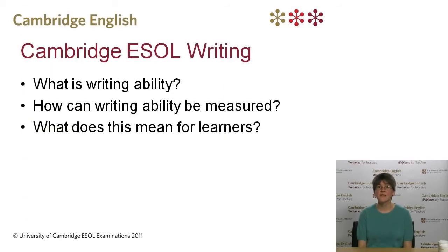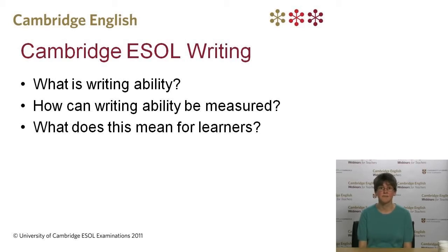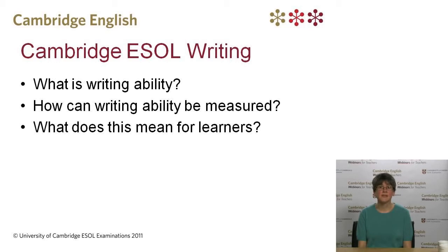At Cambridge ESOL, writing is an integral part of almost all of our language testing exams. This means we're involved in a continuous cycle of research into the different elements of writing and how they interact with each other. We need to know what the different aspects of writing ability are, what's actually involved in producing a text, how to measure these aspects at different levels from elementary up to advanced, and what this means for learners as they work on improving their writing ability. How can positive learner behaviour be encouraged?